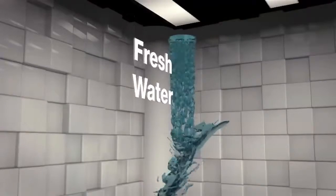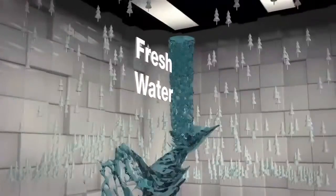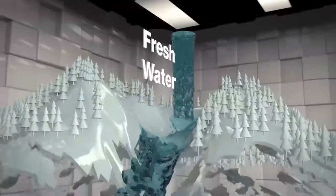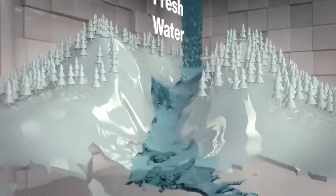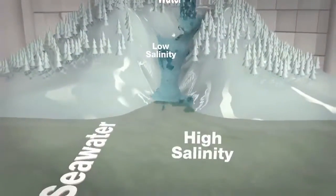When fresh water and salt water collide, for example at the mouth of a river, an enormous amount of energy is unleashed as the waters of different salinity combine into a state of less ordered, uniform salinity.